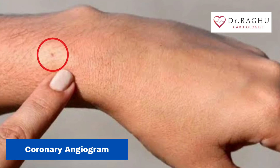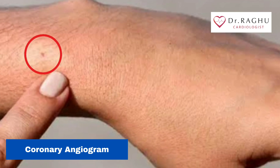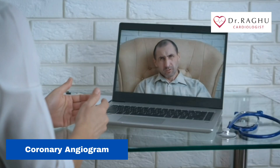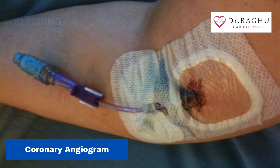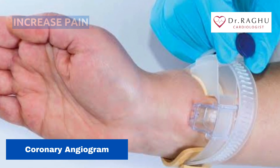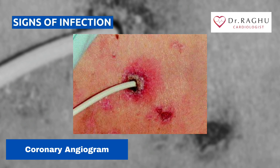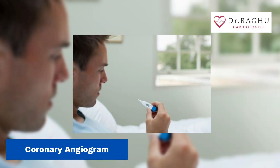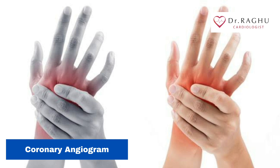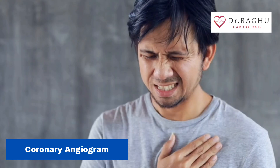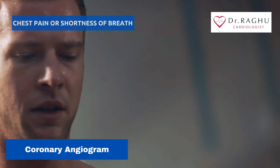Your puncture site is likely to remain tender for a while and may be slightly bruised or have a small bump. Call your doctor's office if you notice bleeding, new bruising or swelling at the catheter site, increasing pain or discomfort, signs of infection such as redness, drainage or fever, a change in temperature or color of the leg or arm used for the procedure, weakness or numbness in the limb where the catheter was inserted, or chest pain or shortness of breath.